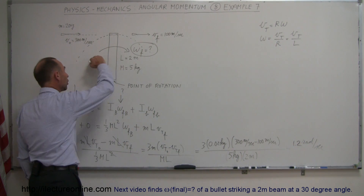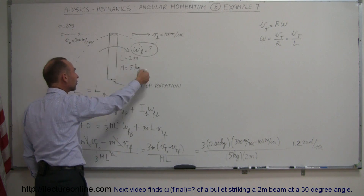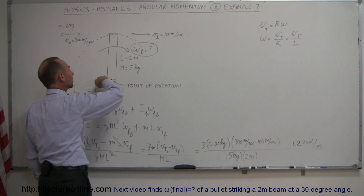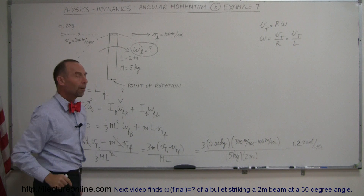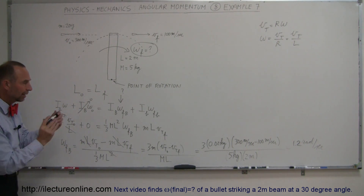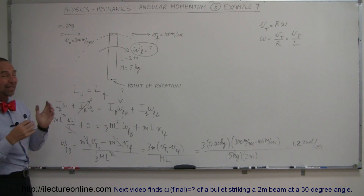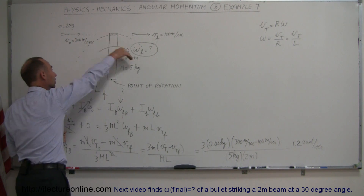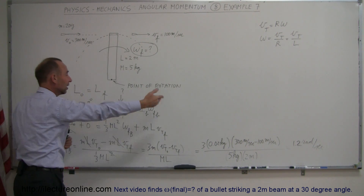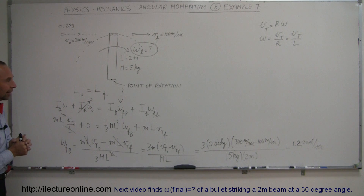Notice that technically it's a negative angular velocity since the rotation is clockwise, so strictly speaking it would be minus 1.2 radians per second. But 1.2 radians per second is the magnitude of the final angular velocity of the beam.